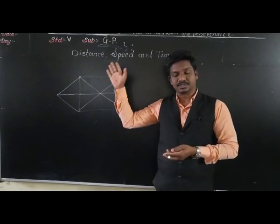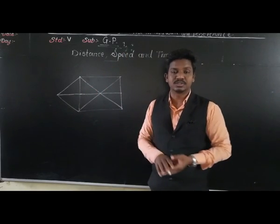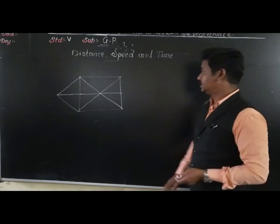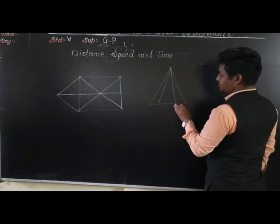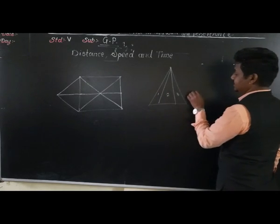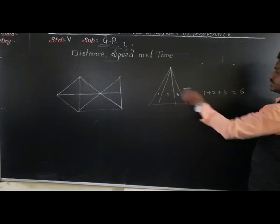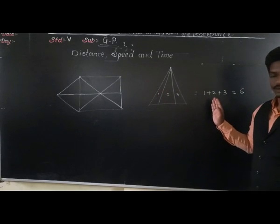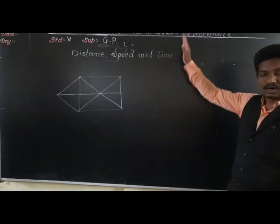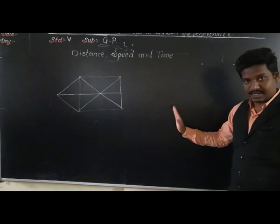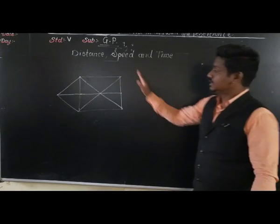Today we are going to start a new chapter, but before that some students asked me about how to count the triangles in a given figure. When the figure is regular, I told you to just write numbers and add them: 1 plus 2 plus 3, that is 6. There are 6 triangles. We can find it easily. But when the figure is irregular — where the triangle is divided only by vertical lines — just adding numbers gave us the triangles.